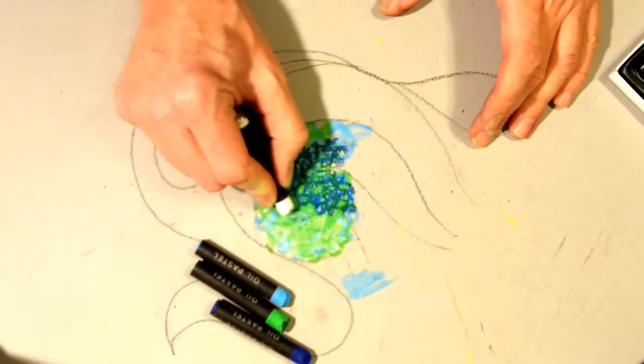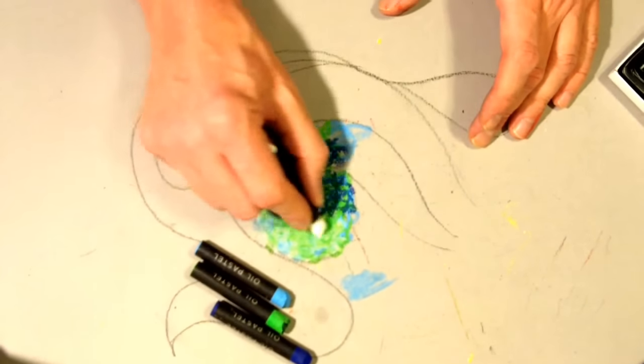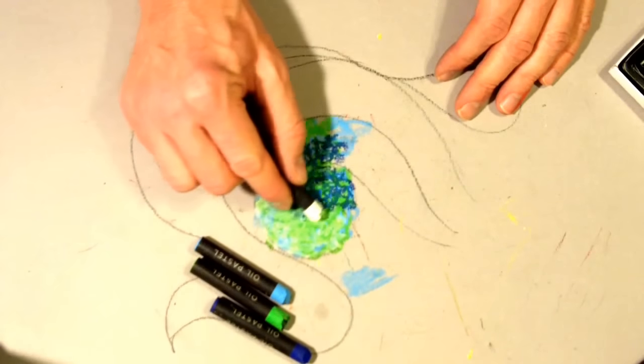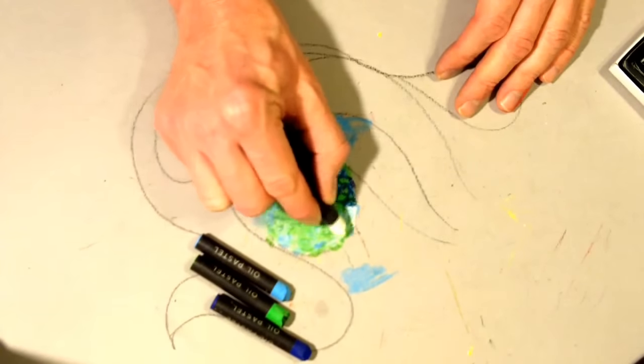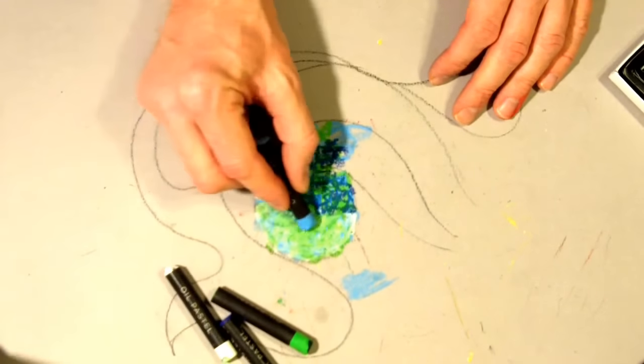So with that third layer your goal is to get rid of as much of that paper as you can. And what's going to happen is your third layer is going to start mixing those first two layers in with it. And you're going to get a lot of different colors going on. It has a very impressionistic type feel to it.